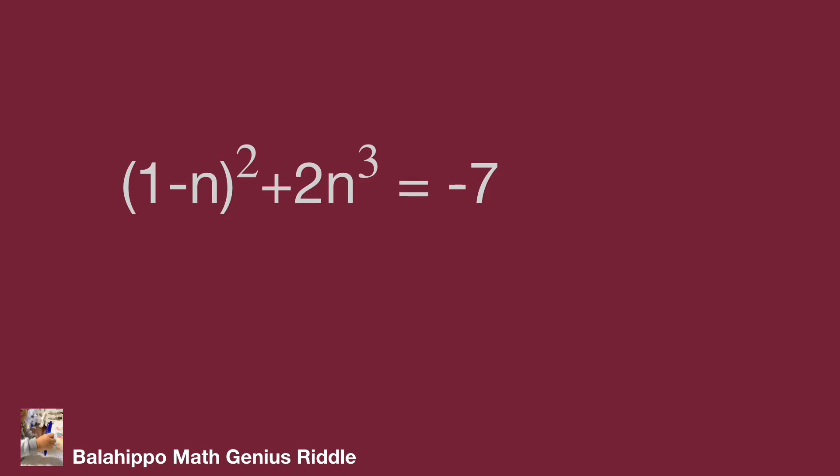Develop the items and adjust the sequence as 2n cubed plus n squared minus 2n plus 8 equals 0. It's easy to divide by 2 in the equation, then we get n cubed plus 1 over 2 n squared minus n plus 4 equals 0.